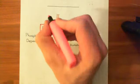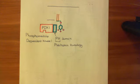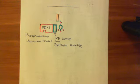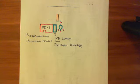The pleckstrin-homology domain binds to the PIP3 molecules, and this has two effects. Firstly, it sequesters the phosphoinositide-dependent kinase 1 enzyme at the inner leaflet of the phospholipid bilayer, moving it from the cytoplasm to just under the inner leaflet. Secondly, it also activates the enzyme, so it now gains its kinase activity — it is a serine-threonine kinase that adds phosphate groups onto serine and threonine residues.